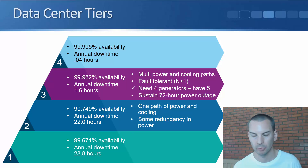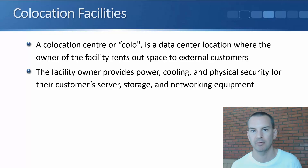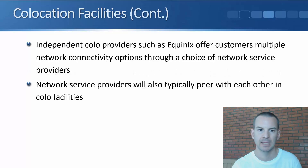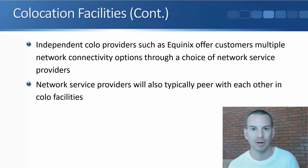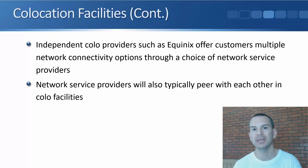A way to make this more affordable is to use a co-location facility. A co-location center, or colo, is a data center where the owner of that facility rents out space to external customers. The facility owner provides the power, cooling, and physical security, and the customer puts their own servers, storage, and networking equipment into the facility. Independent colo providers such as Equinix offer customers multiple network connectivity options through a choice of network service providers — like Verizon and AT&T — that have connections coming into the facility and peer with each other there.